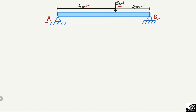To find the support reactions, note that at point A there is a hinge support, which means it can take a vertical reaction RA and also a horizontal reaction RAX. It can resist horizontal forces; however, since there is no horizontal force acting on this beam, we can directly say that the horizontal reaction RAX at support A will be equal to zero.